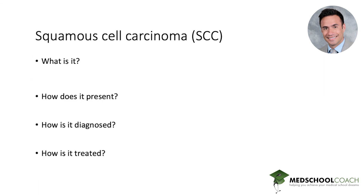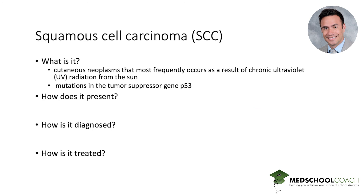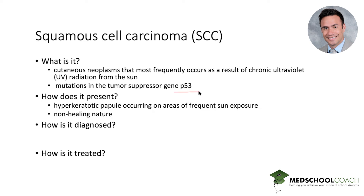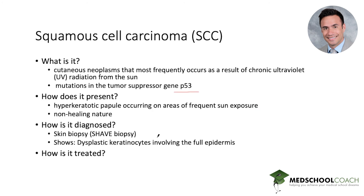Other testable features for squamous cell skin cancer: there's very little additional information needed. It's a skin cancer from the sun. Occasionally they'll ask about the tumor suppressor gene P53 — that's the most common mutation, more often on Step 1 and less frequently on Step 2 and 3, where they want clinical knowledge. It presents as scaly on sun-exposed areas. Diagnosis is by shave biopsy, which can be tested on Step 2. Treatment is local excision.